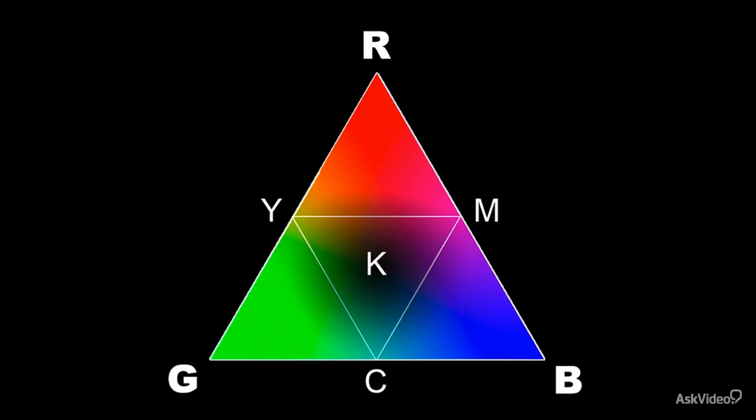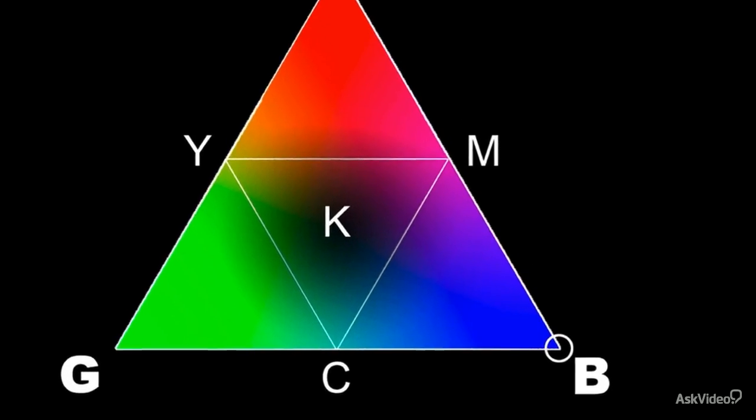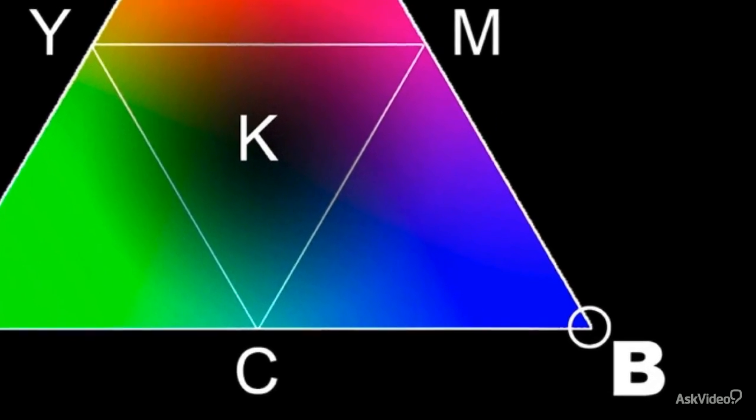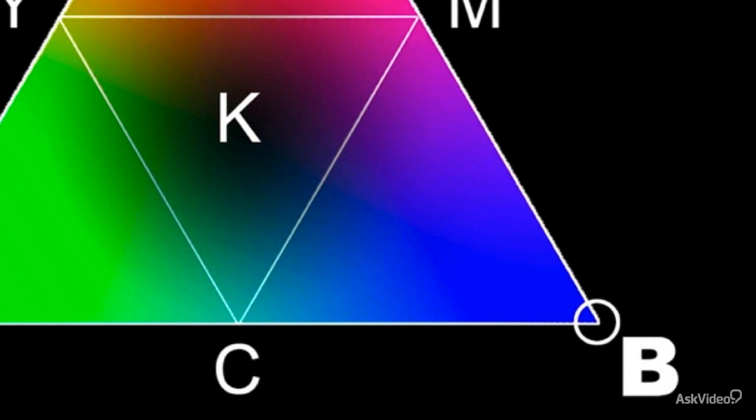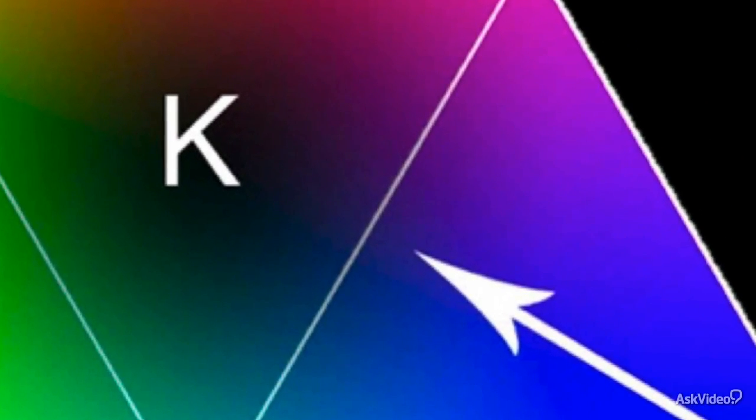So if you choose a color like RGB blue, right down there in the bottom right corner, and you tried to print it, it would make the shortest possible journey to the printable color zone. And that is the color that you'd get instead.